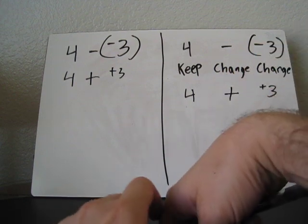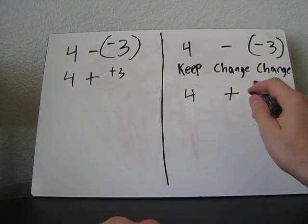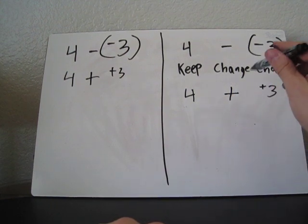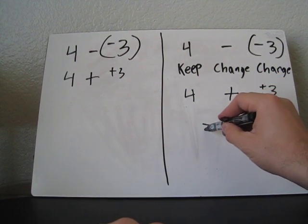And then, now you can just add, like you normally did. 4 plus 3. 4 good guys and 3 good guys get together, so the answer is going to be 7.